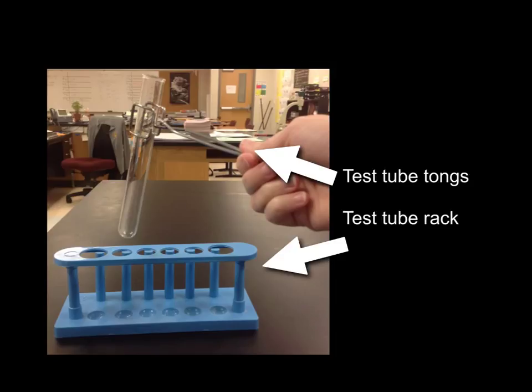When we use test tubes, there are two pieces of lab equipment that you need to know. One are the test tube tongs. That's what you would hold in your hand that will grasp a test tube. You can use it if you needed to heat up the test tube, or if you didn't want to touch the test tube for some reason, you could use the tongs. You'll also need a test tube rack to put your test tube in so that it stands up, or if you have multiple test tubes you need to manage, you can put them all in a test tube rack.